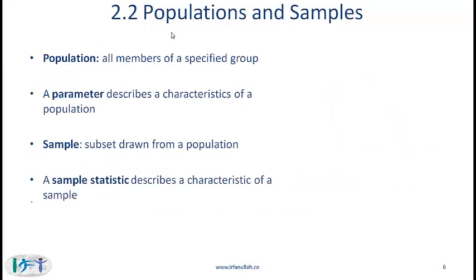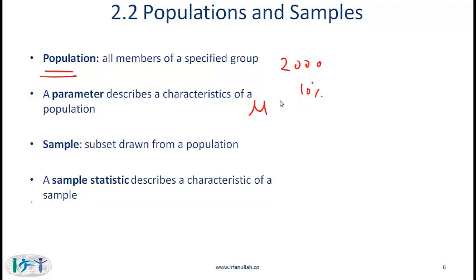Let's cover some basic definitions. A population refers to all members of a specific group — for example, all the publicly traded stocks in a given country could be a population, say 2000 stocks. A parameter describes the characteristics of a population and is generally denoted by the Greek symbol mu. So the average return of these 2000 stocks might be 10%, meaning mu equals 10%.